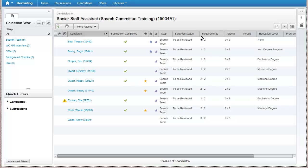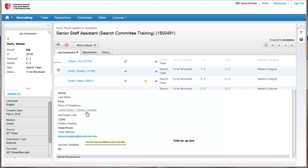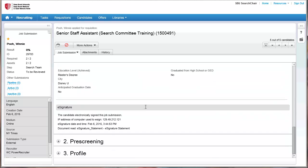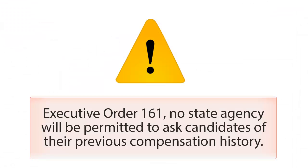Click on a candidate's name to review their application and resume. Scroll down to review the candidate's work history, education, and pre-screening answers. Please note we are no longer asking candidates to provide any information related to their previous salary history or expectations. Due to Executive Order 161, no state agency will be permitted to ask candidates about their previous compensation history. Please be mindful of this, as we are no longer permitted to engage in these types of conversations even during the interview.